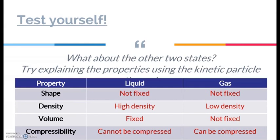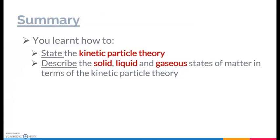Now that you've understood the solid state, take some time to try to explain the properties of the other two states in your worksheet or notes using the kinetic particle theory. Why is the shape of a liquid not fixed? Why is it that only gases can be compressed? Think about the reasons based on the three factors — spacing, arrangement, and movement of the particles — to help you answer how the properties differ. In summary, you have learned how to state the kinetic particle theory: all matter is made up of particles and they are in constant and random motion. We have also discussed how to describe the solid, liquid, and gaseous states of matter in terms of spacing, arrangement, and movement of the particles. With that, you should be able to attempt the questions in your notes or worksheets assigned by your teachers.